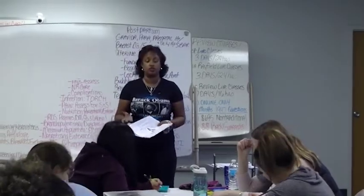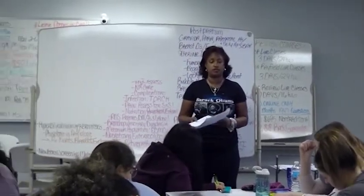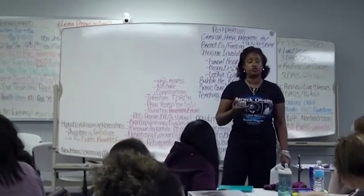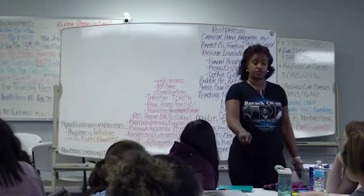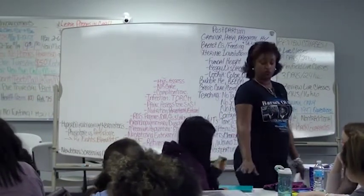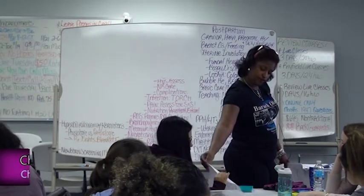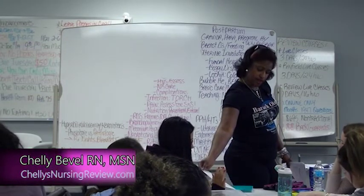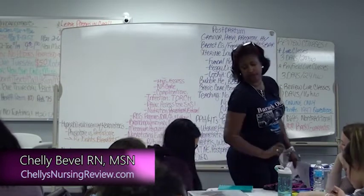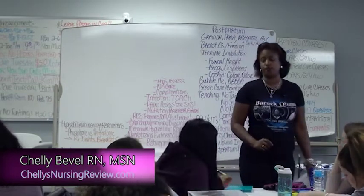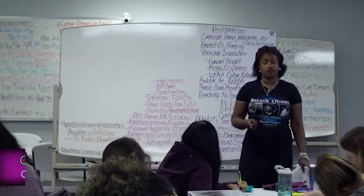Cephalohematoma is a good place to start with regards to jaundice. If you look at the two situations, you have on this page just the caput, but if you flip it, you have both on the other side. You care about the cephalohematoma the most, because it can lead to jaundice.